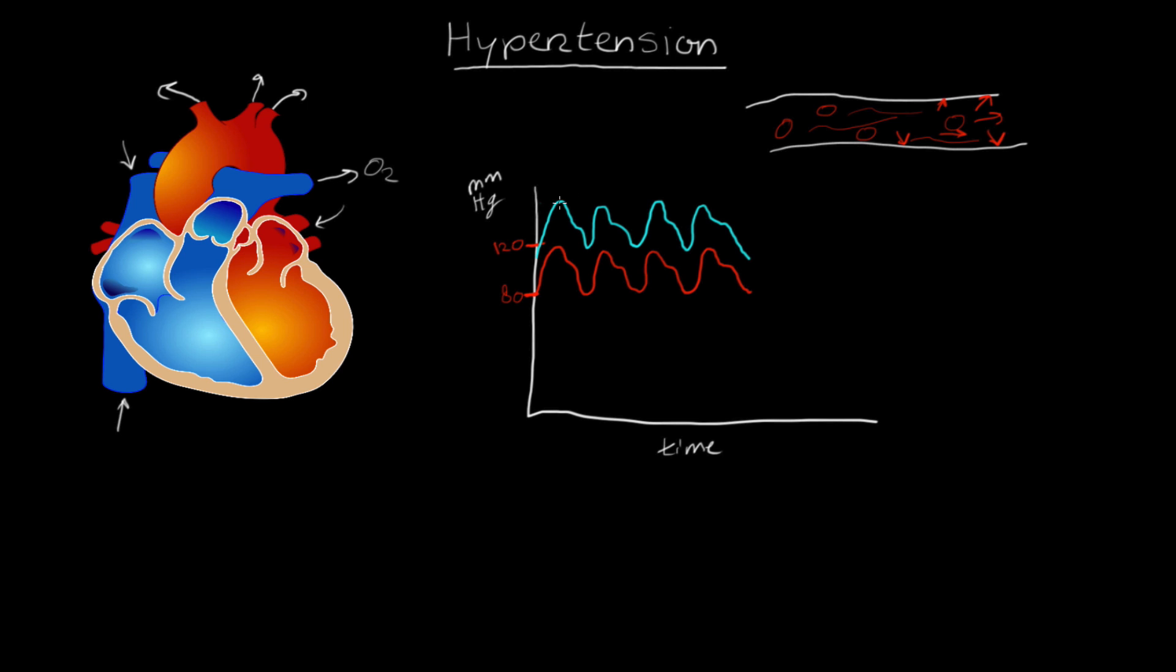So it's going to be significantly higher than that average, 120 over 80. And let's say this individual is maybe around 145 over 100 or something of that sort. Significantly higher than normal. This is high blood pressure. This is hypertension.